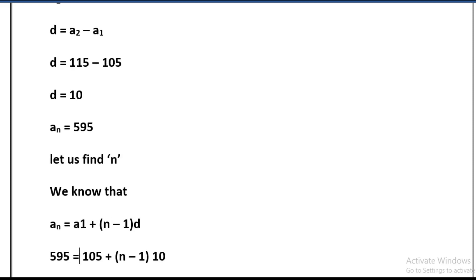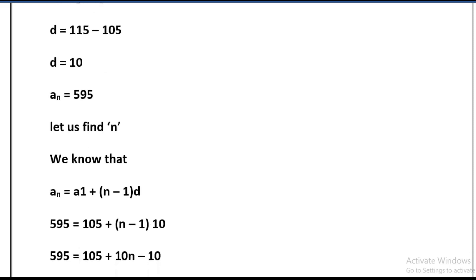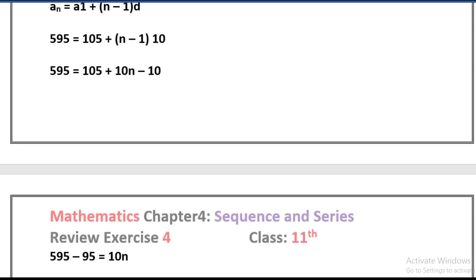By putting the values of a1 and d, 595 equals 105 plus (n minus 1) times 10. So 595 equals 105 plus 10n minus 10.